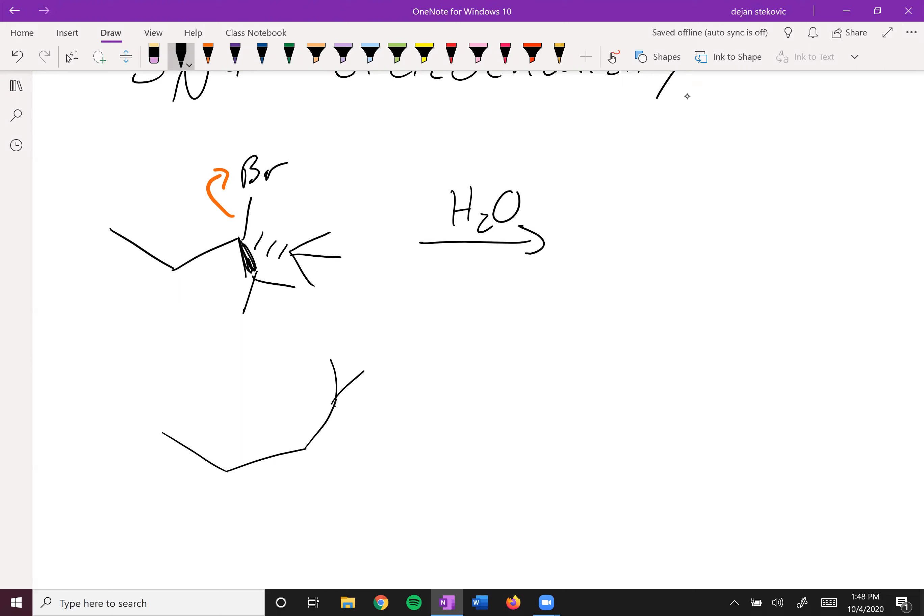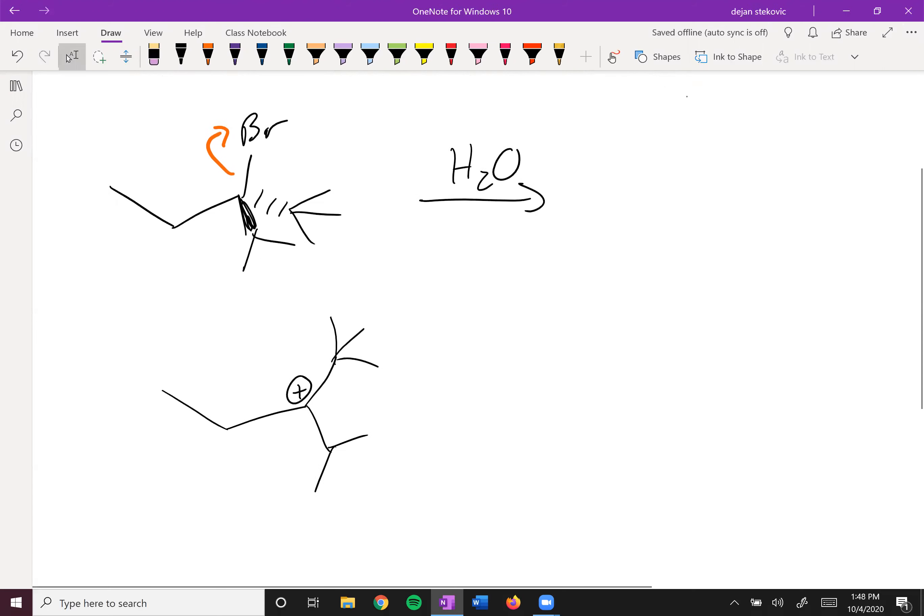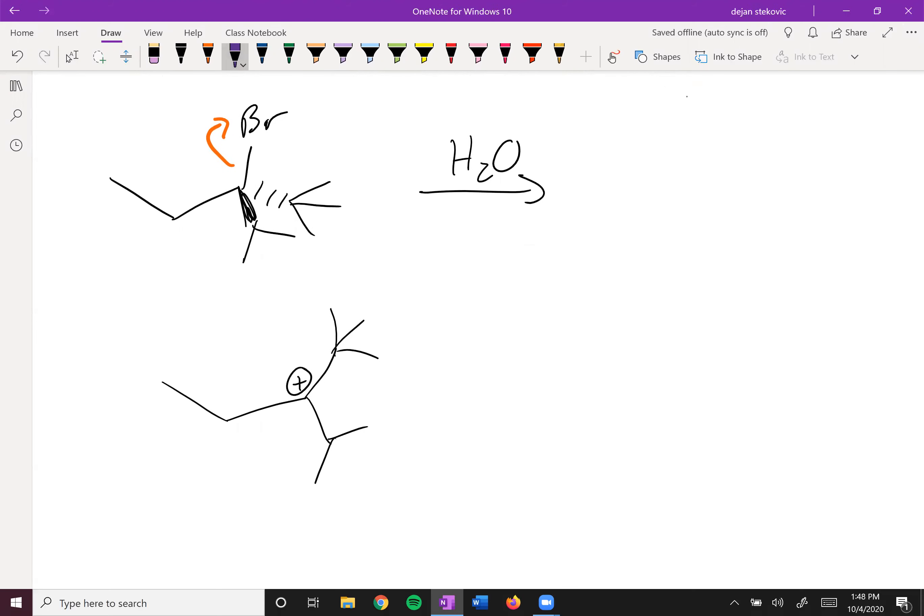So the first thing that's going to happen is this bromine is going to simply leave. And then as soon as we do that, we form our carbocation, which is planar, and then essentially deletes out the stereochemistry.